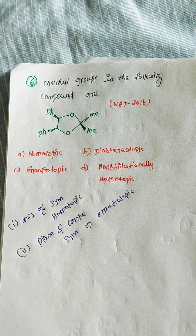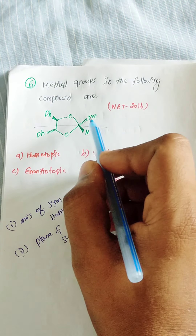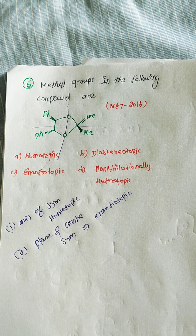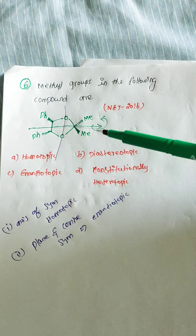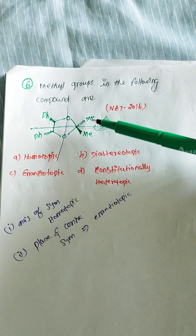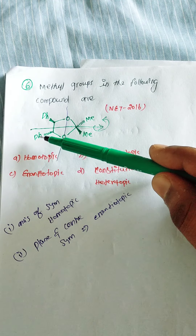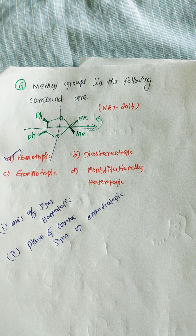In this molecule, there is a plane of symmetry. We can imagine a C2 axis. If we rotate 180 degrees, the methyl group above the plane converts to below the plane. So the axis of symmetry is present, which means it is homotopic.